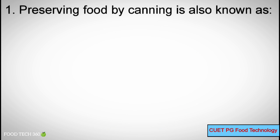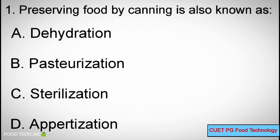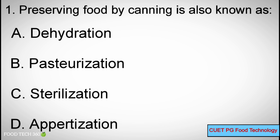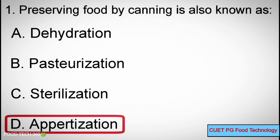Q1: Preserving food by canning is also known as — A. Dehydration, B. Pasteurization, C. Sterilization, D. Appertization. Correct answer: D. Appertization.